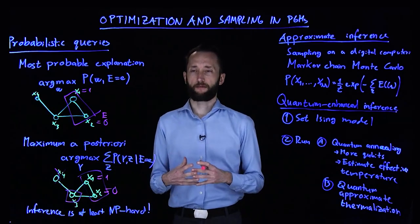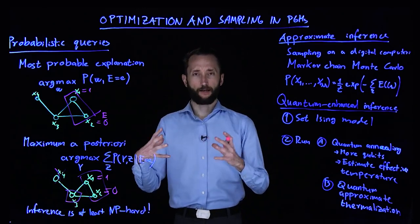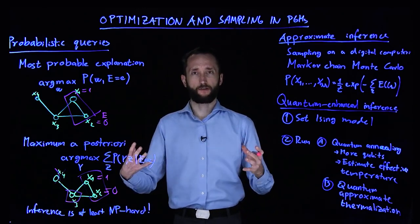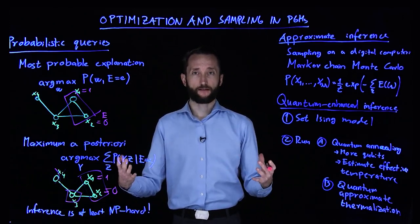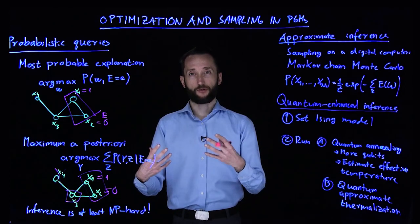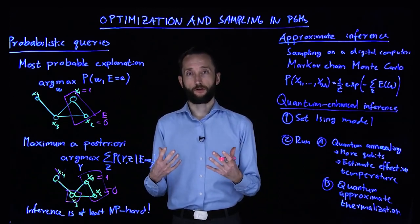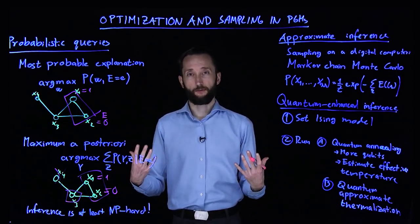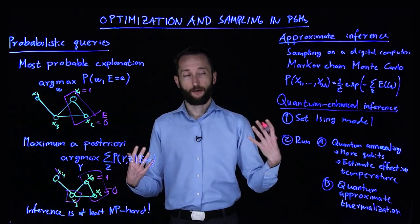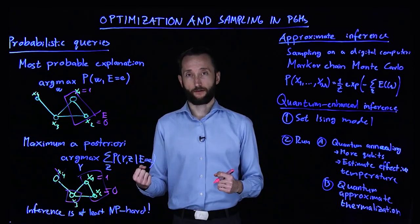Think about things like having a probability distribution describing different symptoms, and there are correlations. And you have a patient and you observe a couple of those symptoms but not others. Then you can run a query to find out what are the other symptoms that you should be looking for, assuming that the person has a certain kind of disease.